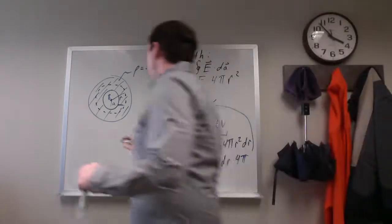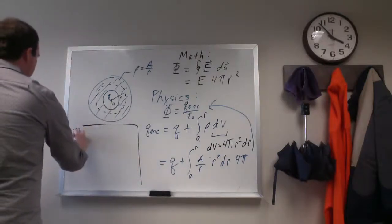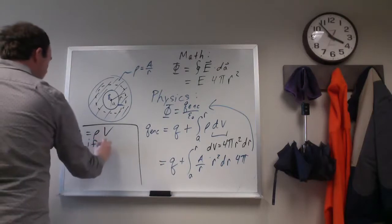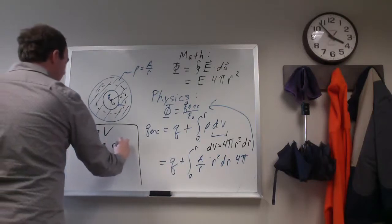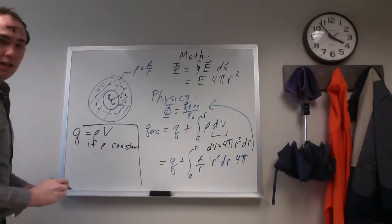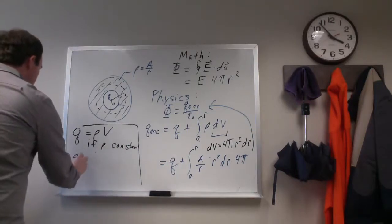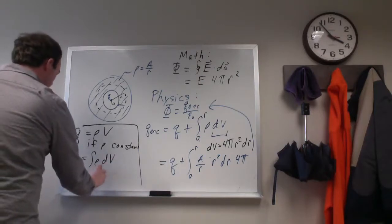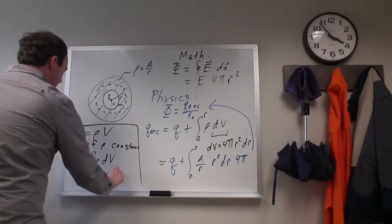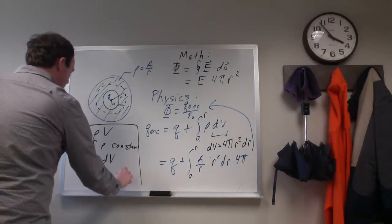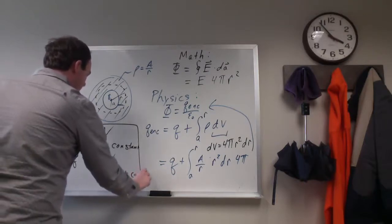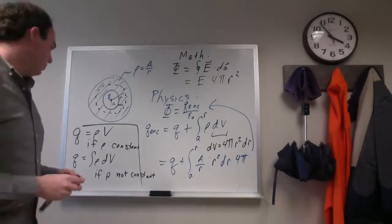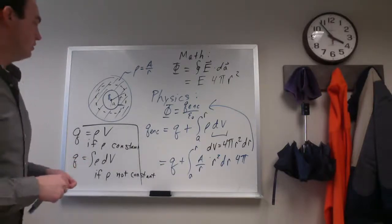So, q is equal to rho times volume if rho is constant, but q is equal to the integral of rho dv if rho is not constant. So, for your homework this week, you have to do a little bit of calculus for this problem.